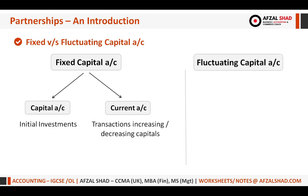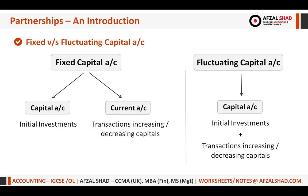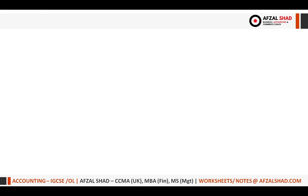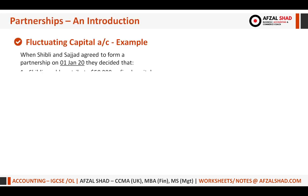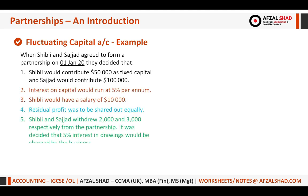Under the fluctuating capital method, we create just one capital account. The initial investment plus all transactions that increase or decrease capital are all part of that one T-account. In the fluctuating method we combine all entries; in the fixed capital method we separate the initial investment and put all other entries into the current account.